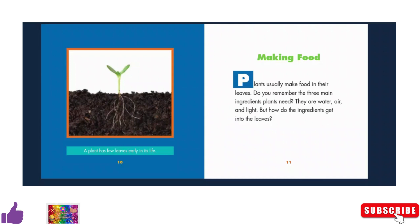A plant has few leaves early in its life. Making food: Plants usually make food in their leaves. Do you remember the three main ingredients plants need? They are water, air, and light. But how do the ingredients get into the leaves?